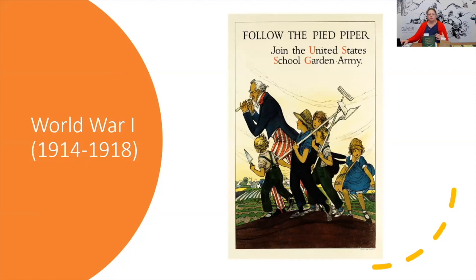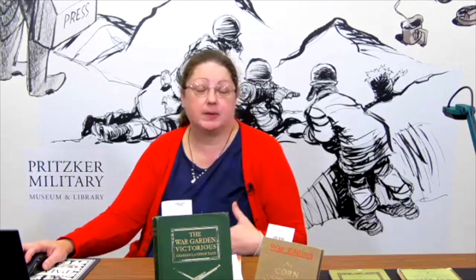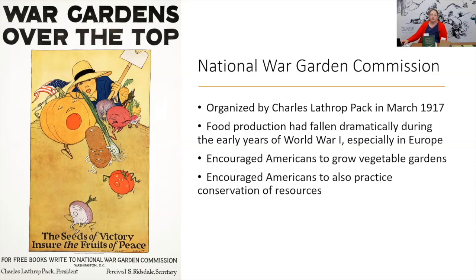Several garden commissions were started. One of the early ones was the United States School Garden Army, where students were encouraged to garden at their schools as part of their science classroom work. The other was the National War Garden Commission, organized by Charles Lathrop Pack in March 1917. Food production had fallen dramatically during the early years of World War I, especially in Europe, so they encouraged Americans to grow vegetable gardens and practice conservation of resources.